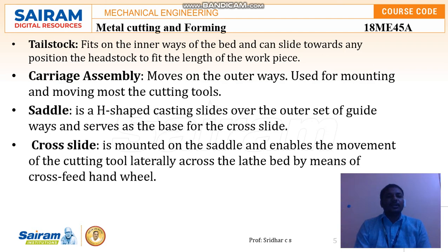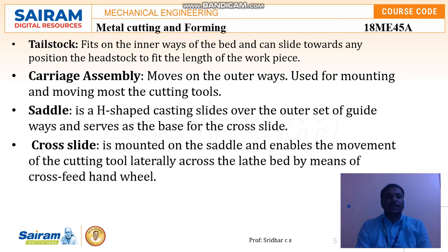The function of the tailstock: it fits on the inner ways of the bed and can slide towards the position of the headstock, moving from the right-hand side towards the center of the lathe. The function of the carriage assembly is to move on the ways and is used for mounting and moving the cutting tools. The saddle is H-shaped and slides over the outer guideways, serving as the base.